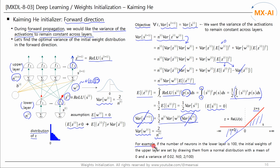Let me give you an example. If the number of neurons in the lower layer is 100, the initial weights of the upper layer are set by drawing them from a normal distribution with a mean of 0 and a variance of 0.02.